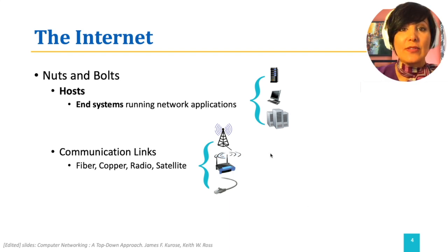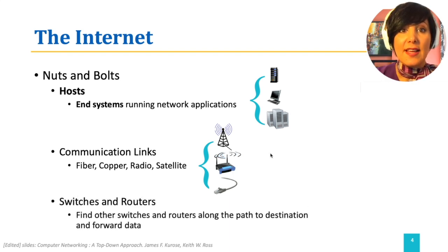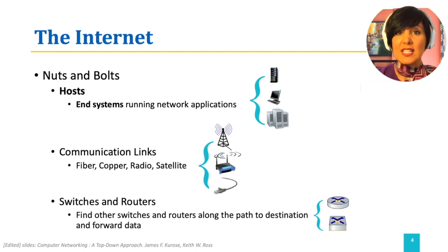Switches and routers are devices that are placed in the intersection of the communication links. They receive data in their incoming links and place it on their outgoing links. Switches do this using a mechanism called switching, and routers through a mechanism called routing. Later in this course, we will discuss the details of each of these functionalities.